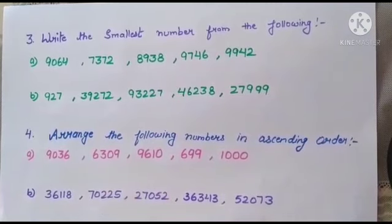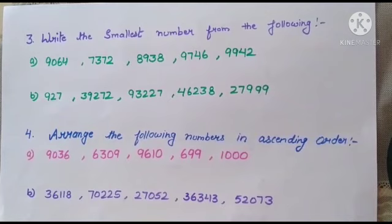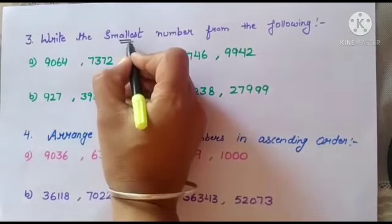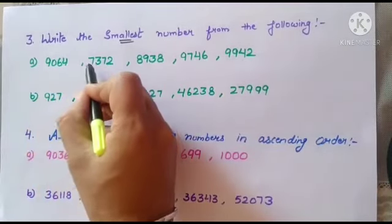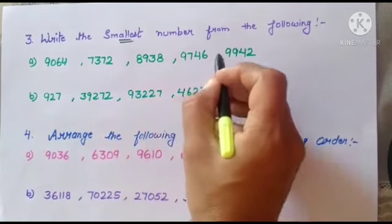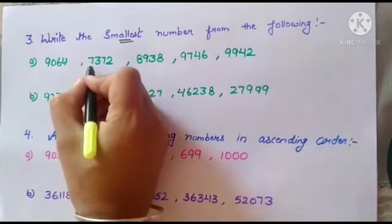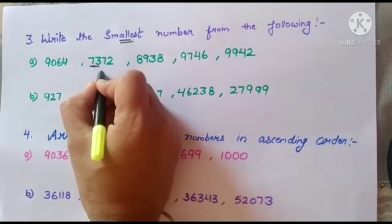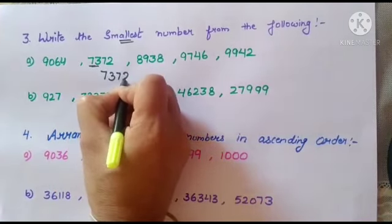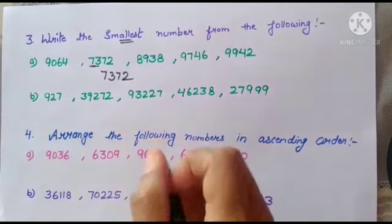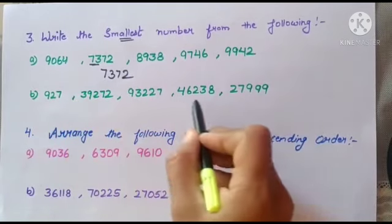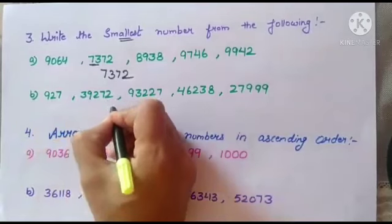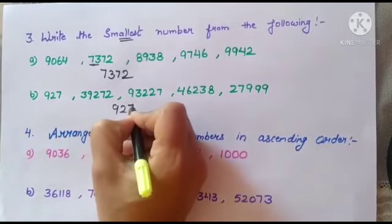Question 3: Write the smallest number from the following. We compare the first digits: 9, 7, 8, 9, 9. The smallest first digit is 7, so the answer is 7372. For the next set, one number has only 3 digits while others have 5 digits, so the smallest is 927.